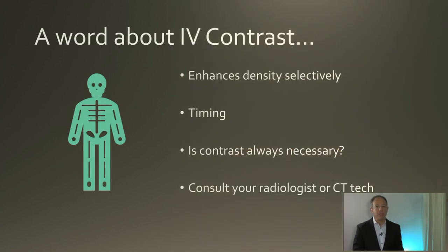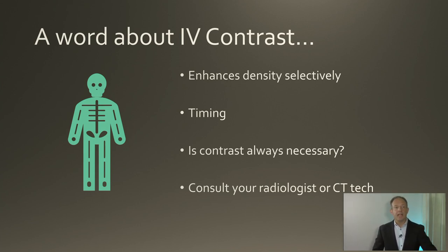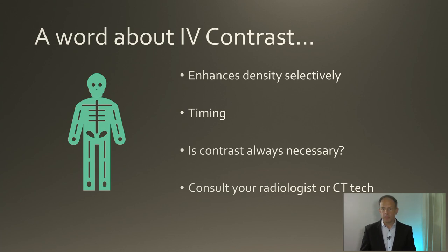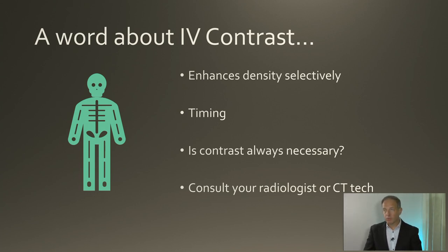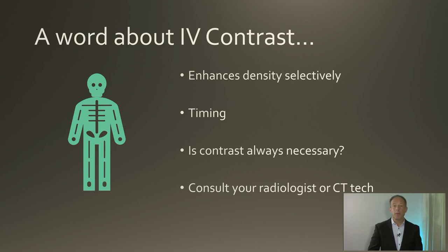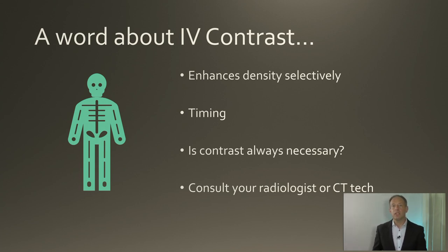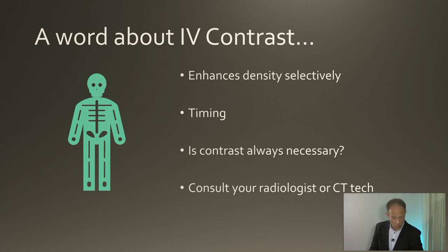What about IV contrast? This is another game changer — another way we enhance things selectively, but this time it's all about timing. It's an intravenous product that goes into the bloodstream, and you want to capture images when that contrast is sitting in the area you most want to examine. If you want to look for an aortic dissection, make sure IV contrast is in the aorta. For a trauma patient, you want contrast in the solid organs to look for splenic injury or a blush from extravasation. For diverticulitis, you want contrast in the colon and adjacent mesentery to show fat stranding. For bladder injury, wait for delayed images with contrast in the bladder.